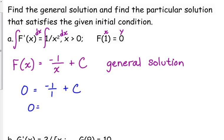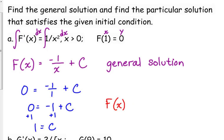We've got 0 is equal to negative 1 plus c. Solving for c, we add 1, so c equals 1. That means our particular solution, big f of x, is negative 1 over x plus 1.